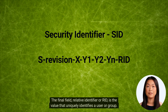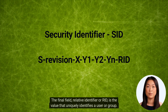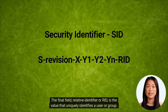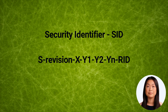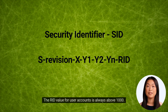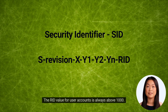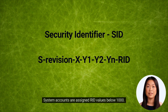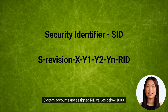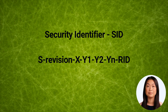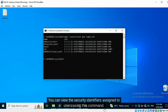The final field, Relative Identifier or RID, is the value that uniquely identifies a user or group. The RID value for user accounts is always above 1000; system accounts are assigned RID values below 1000. You can view the security identifiers assigned to users using this command.